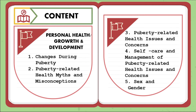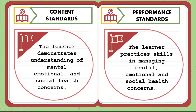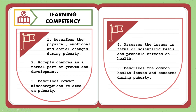Number four: self-care and management of puberty-related health issues and concerns — this talks about how to take care of yourself when dealing with puberty and what other things to do about it. Number five: sex and gender. The content standard states that the learner demonstrates understanding of mental, emotional, and social health concerns. Now let's move on to the learning competencies.